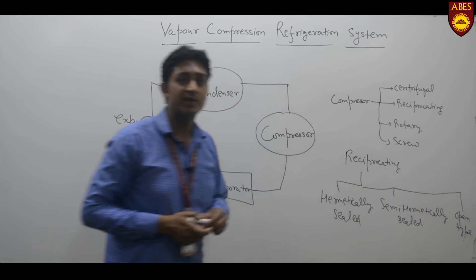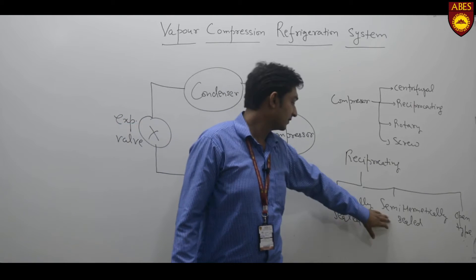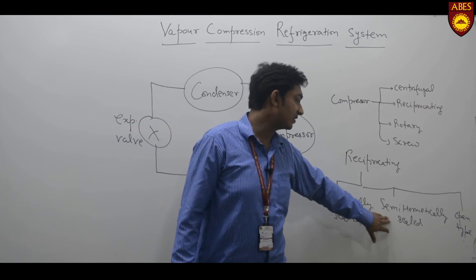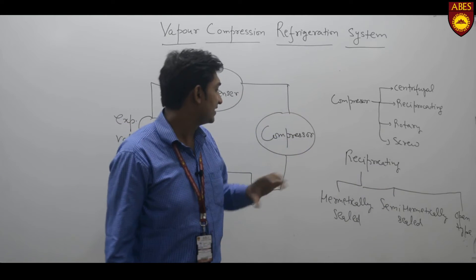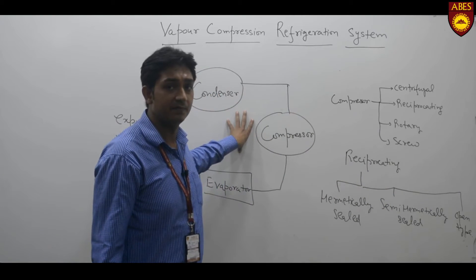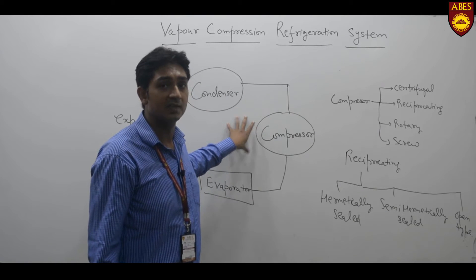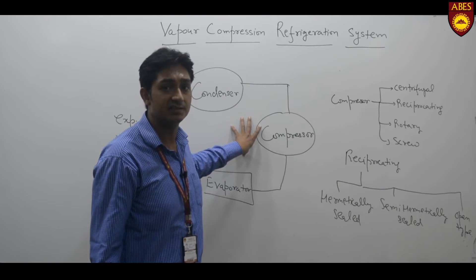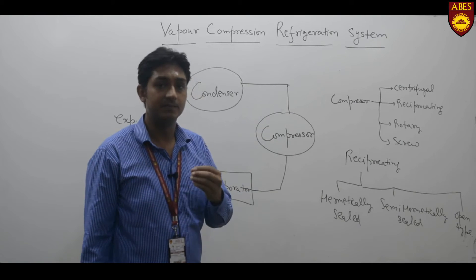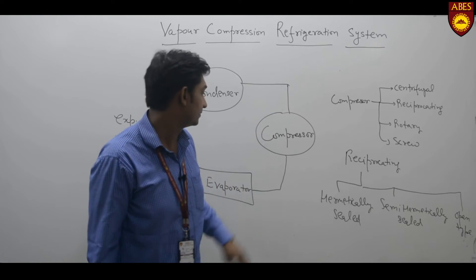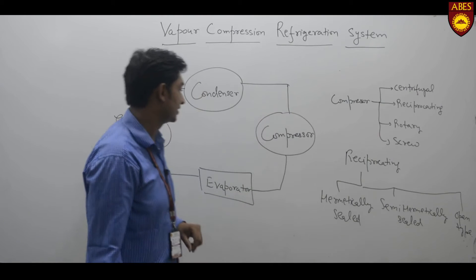The reciprocating compressor can be further classified as hermetically sealed compressor, semi-hermetically sealed compressor, and open type. The applications of this system include refrigerators used at home, air conditioners, centralized air conditioners, and deep freezers in which we store ice cream and items in cold storage.